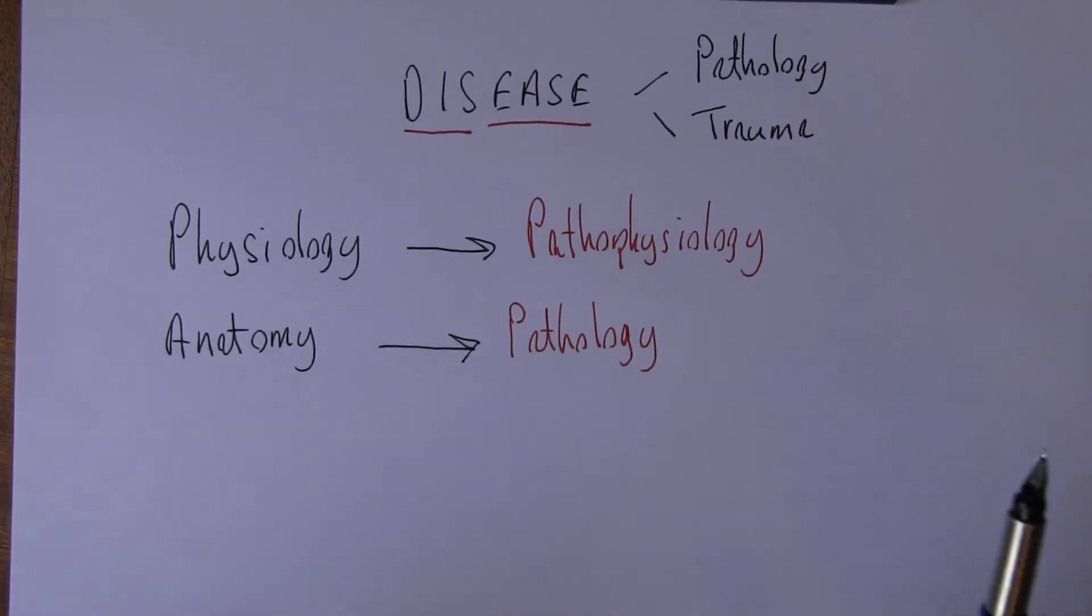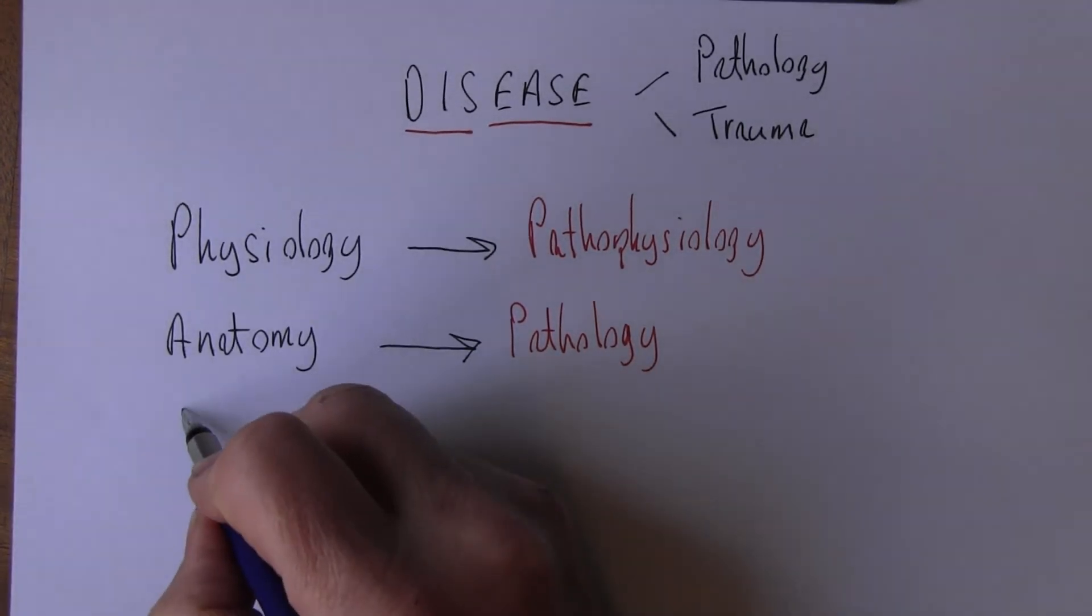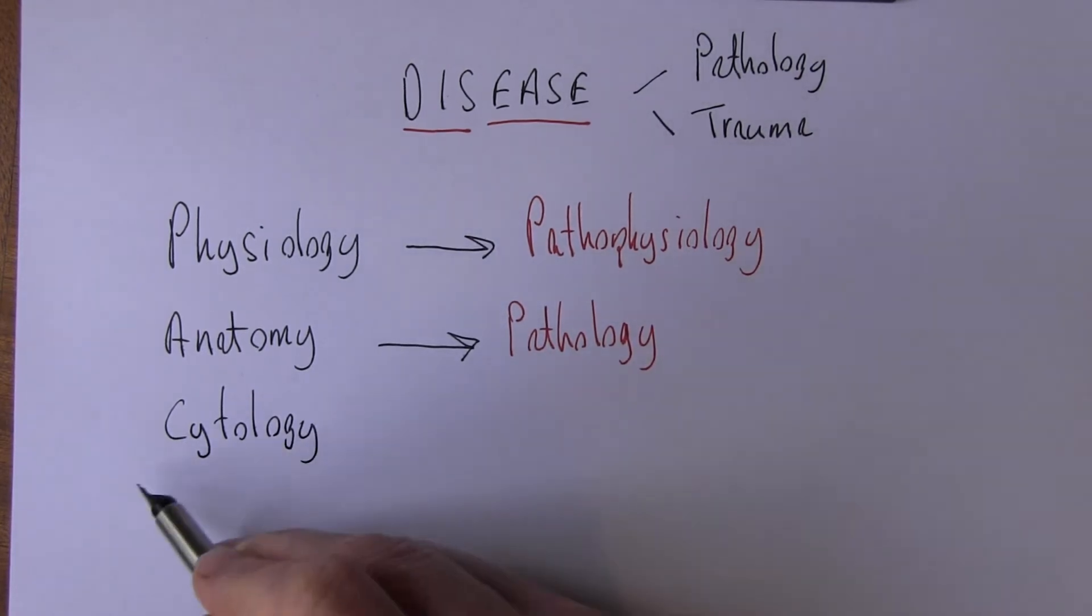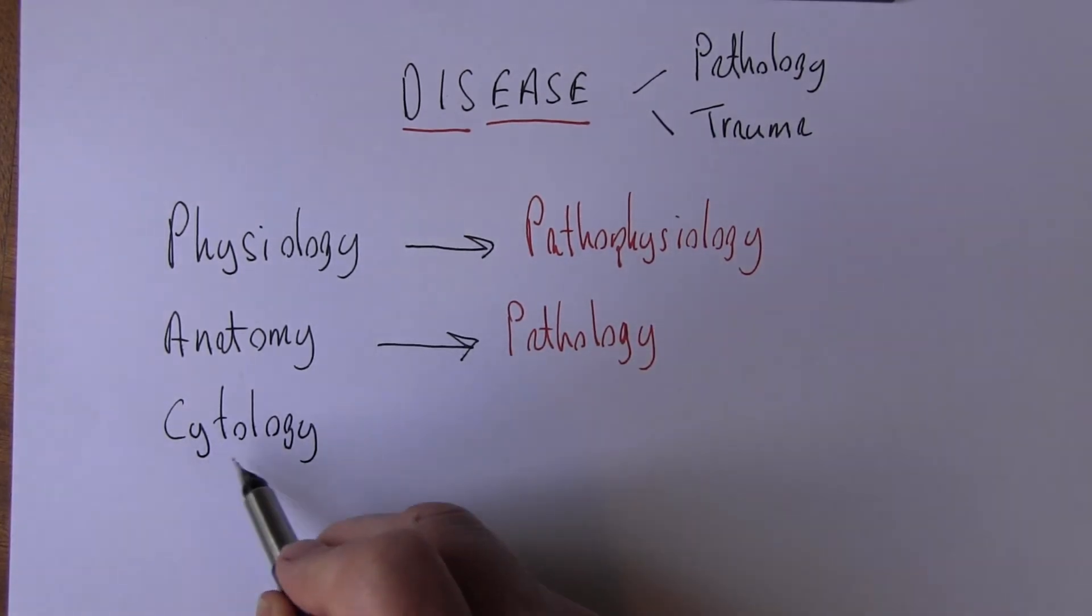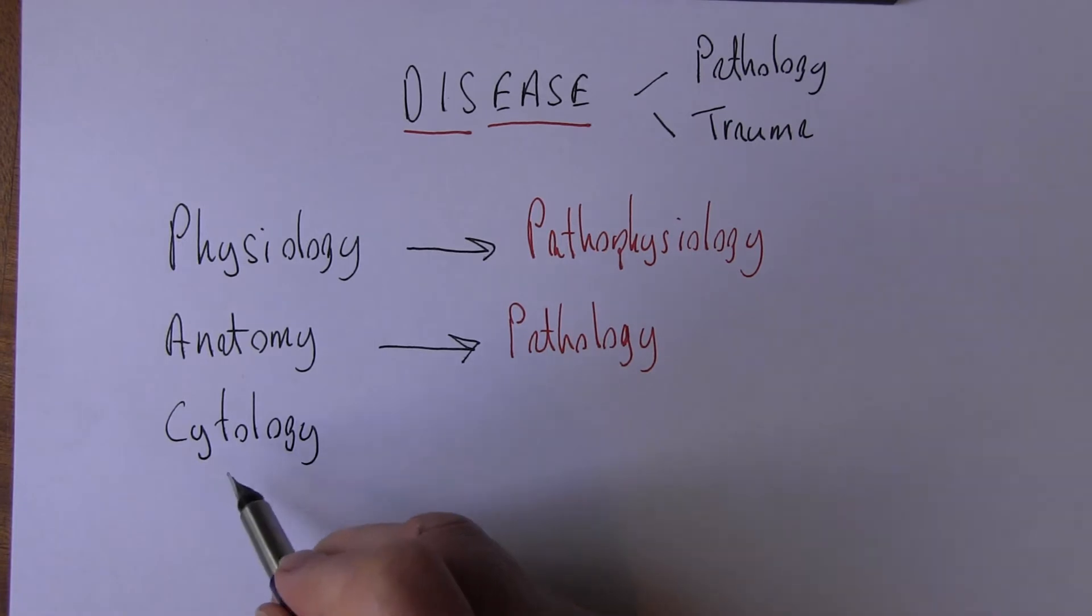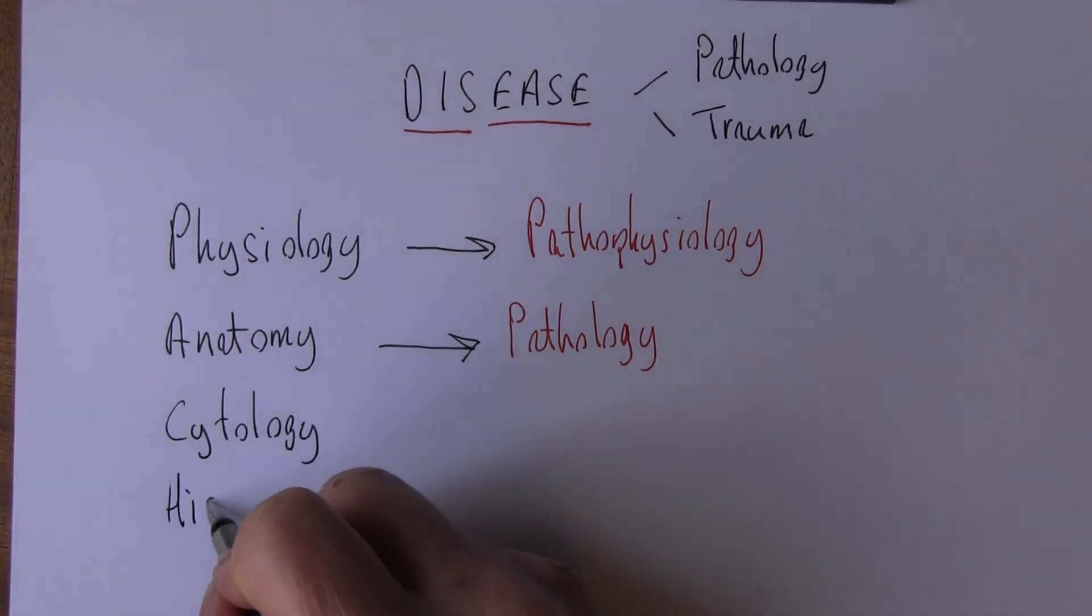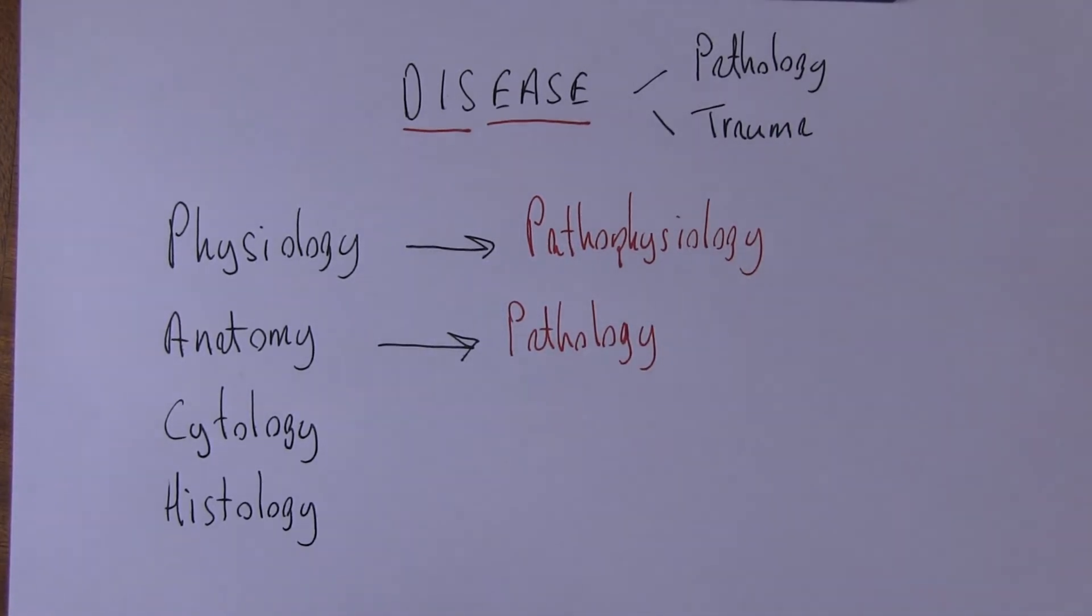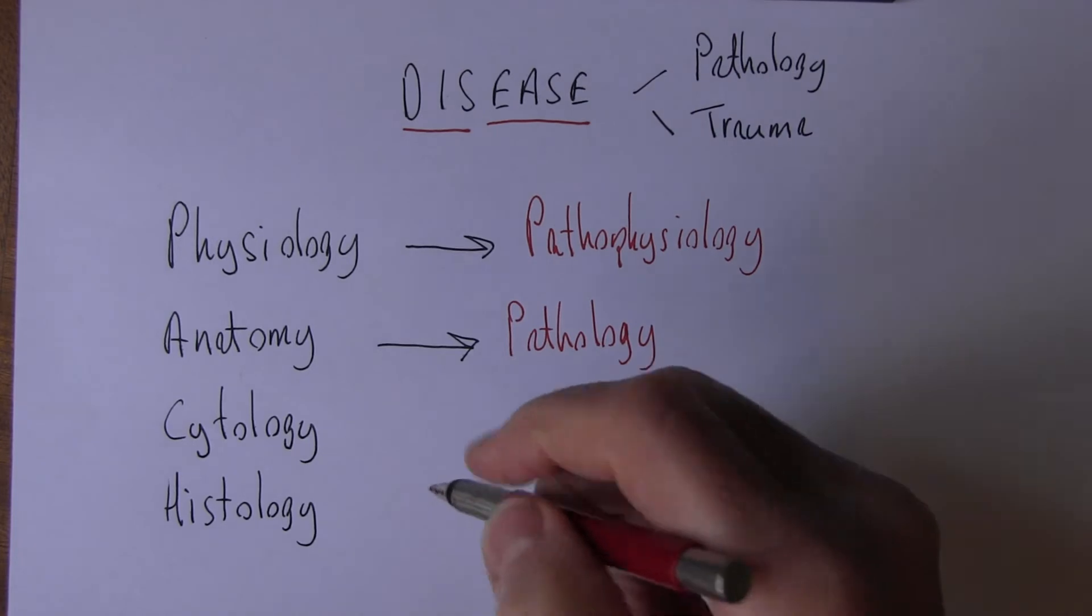We can subdivide these. Cytology, for example - site is cells, ology the study of - cytology the study of cells. Histology: the study of tissues. And again we can look at these in the abnormal situation.